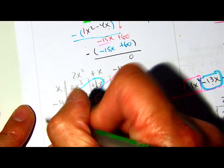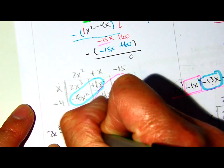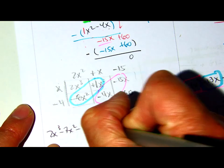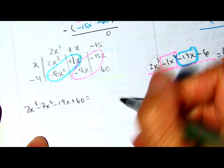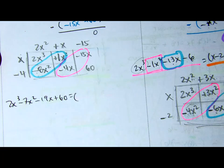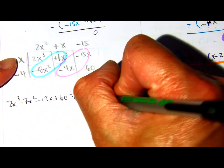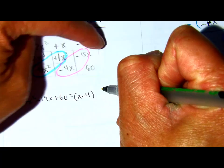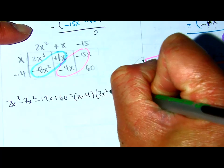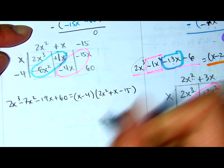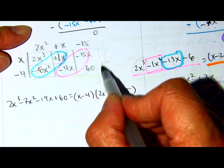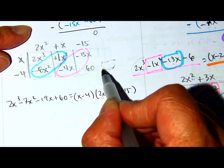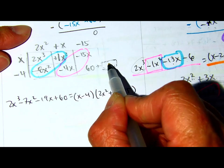So, 2x to the third minus 7x squared minus 19x plus 60 is equal to... I think this will make sense. You have x minus 4 times 2x squared plus x minus 15. The divisor times the quotient. In this problem, we didn't have a remainder when I needed to add over here. So, the remainder would be 0.